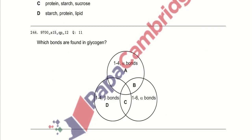Which bonds are found in glycogen? When we look at the structure of glycogen, we can say that alpha-1,4 glycosidic bonds and alpha-1,6 glycosidic bonds are present in glycogen. So, option B is the right answer, which includes both bond types.